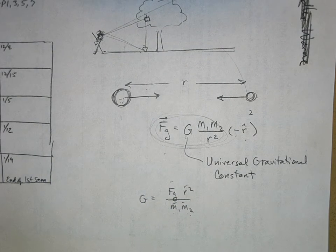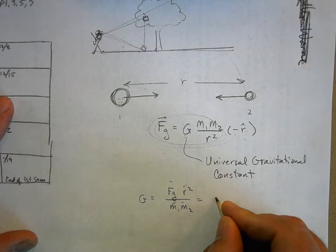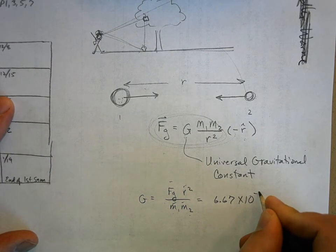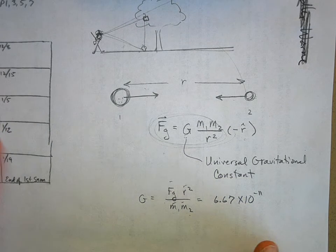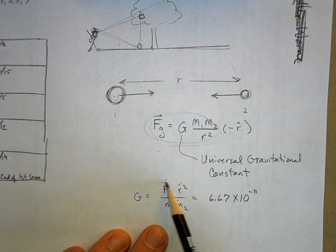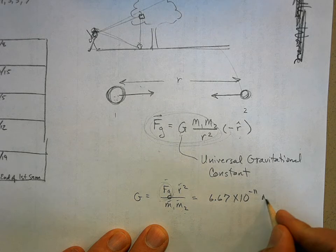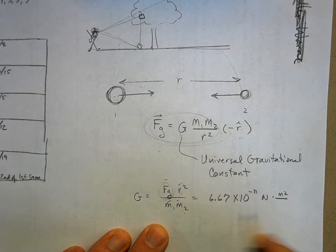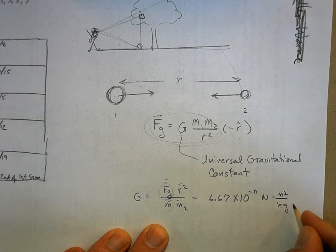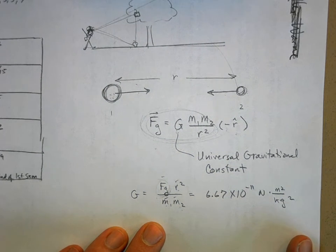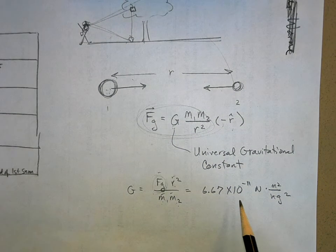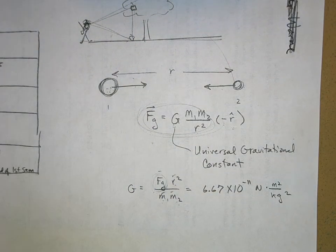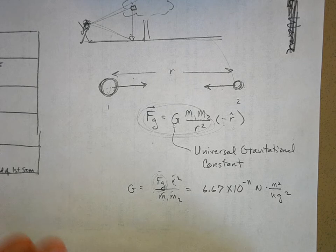Turns out he got a very very tiny number: 6.67 times 10 to the negative 11. Now let's look at the units here: newtons meters squared per kilogram squared. This is a tiny number, negative 11.